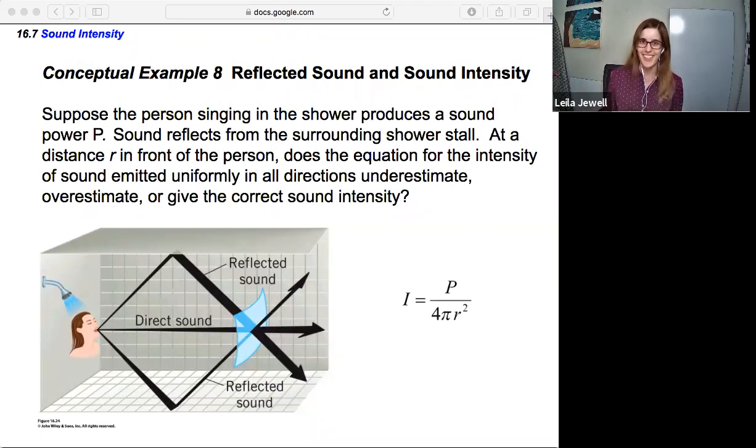Did you do that? I'm hoping so. This is our equation here for the intensity of sound emitted uniformly in all directions. Note this is assuming it's going in a sphere outward, so this is only accounting for the direct sound - the sound as it is emitting in a direct path spherically outward.